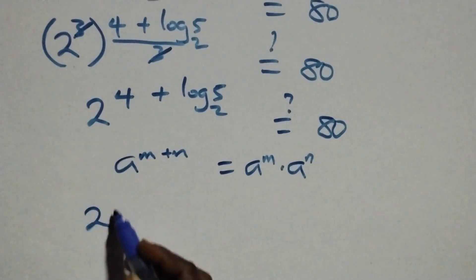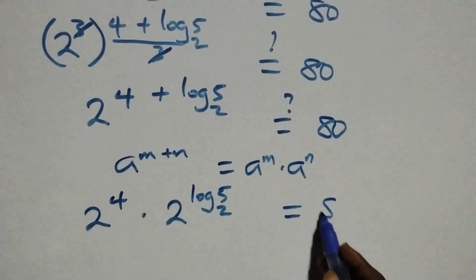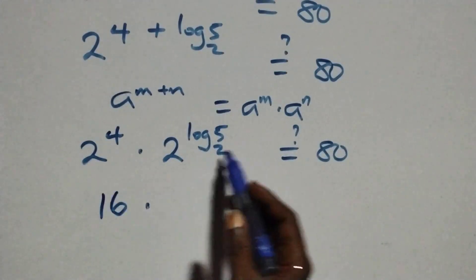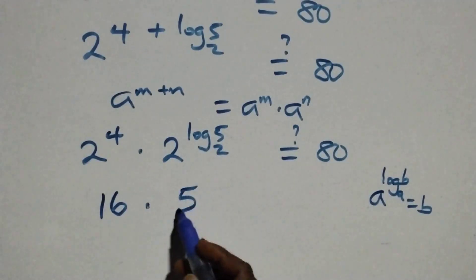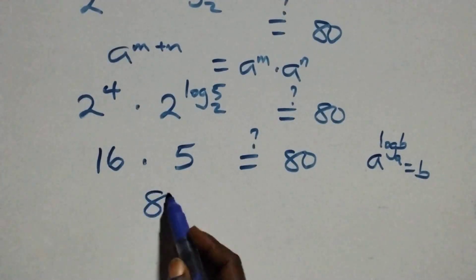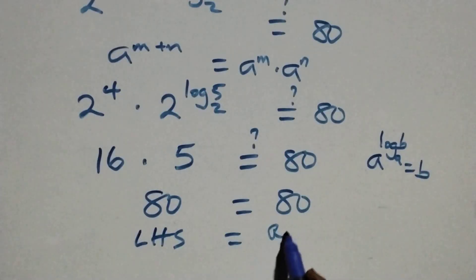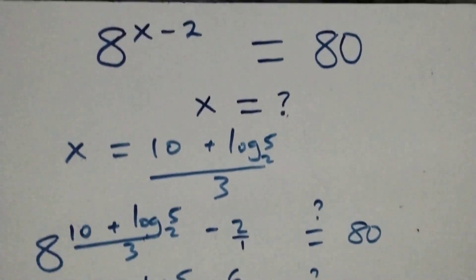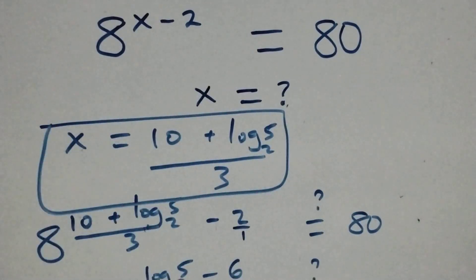We have 2 raised to power 4 times 2 raised to power log base 2 of 5, equals 80 on this side. 2 raised to power 4 is 16. This follows the identity: a raised to power log base a of b equals b. So we have 16 times 5, that's 80, which equals 80 on this side. The left hand side equals the right hand side. Therefore, we conclude that x equals 10 plus log base 2 of 5, all over 3, satisfies the given problem.